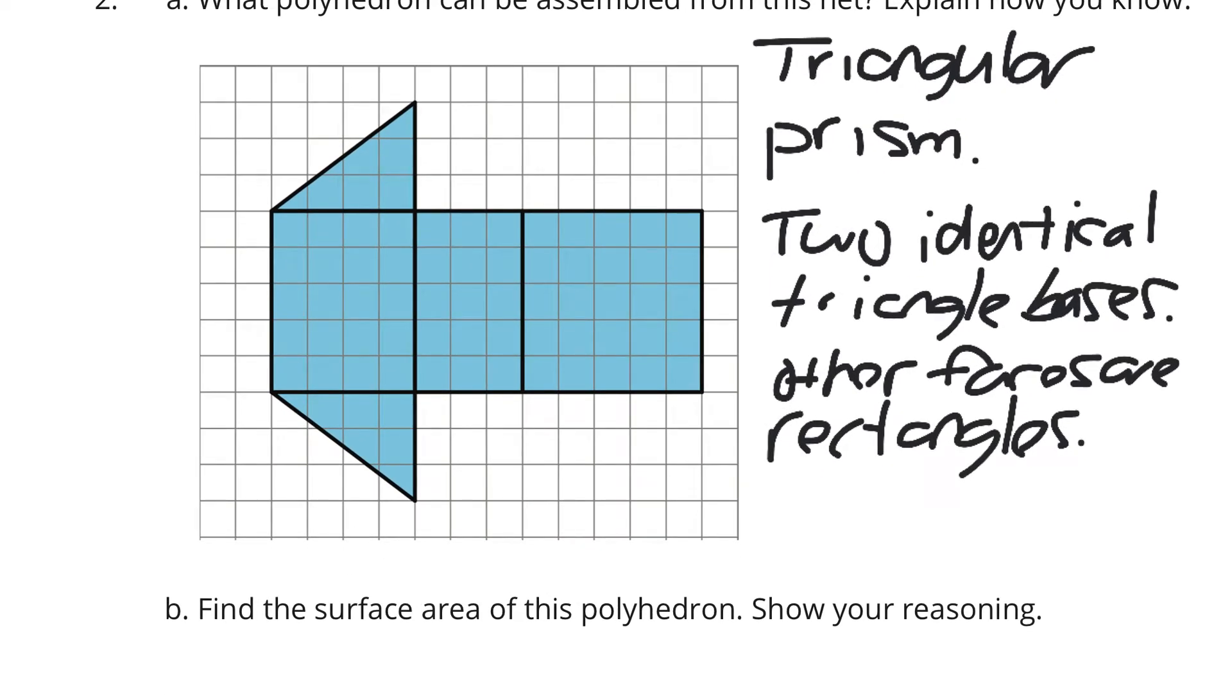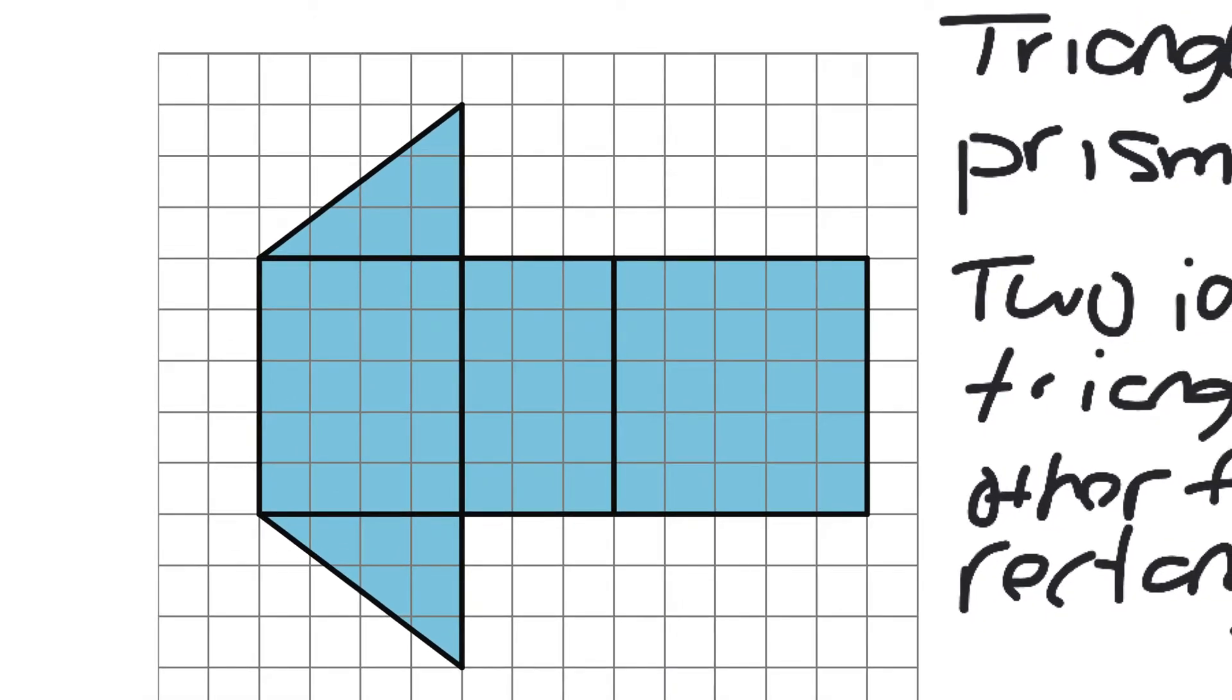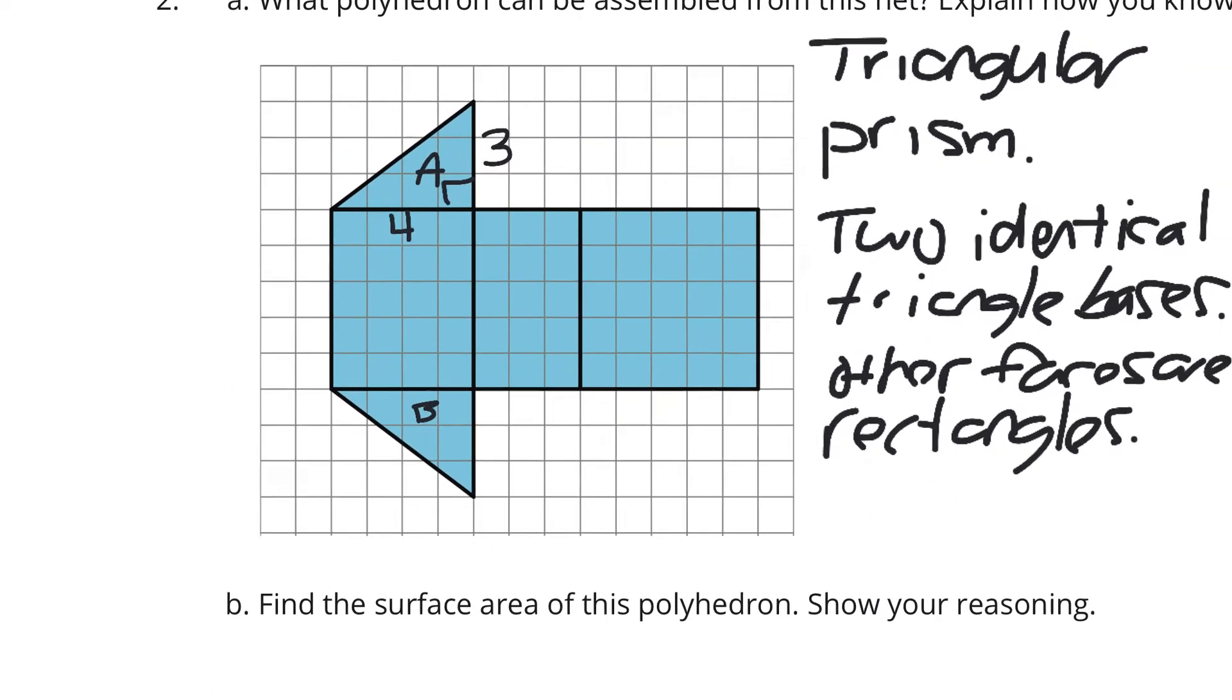And in B, it says, find the surface area of this polyhedra and show your reasoning. Let's look at these triangles first. The triangles are identical, call them triangle A and triangle B if you really like. If I look for the right angle, I have a height of 3 and a base of 4. And so,